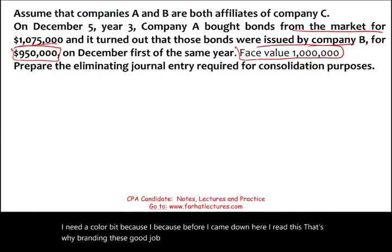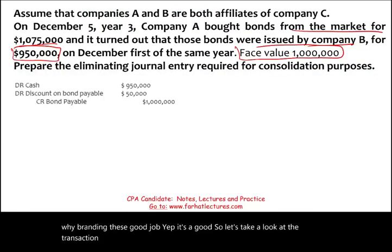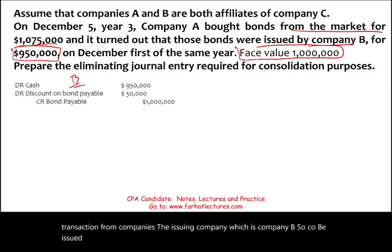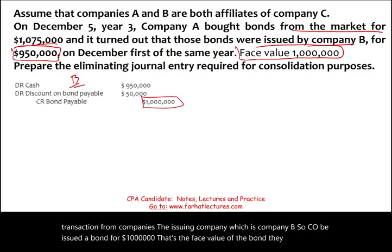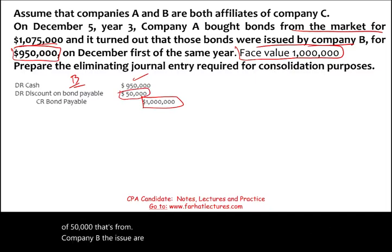Let's look at the transaction from the issuing company, which is company B. Company B issued a bond with a face value of $1,000,000 — they credit bonds payable for $1,000,000. They received cash of $950,000 and recorded a discount of $50,000. That's the entry from company B, the issuer — the company that borrowed the money.